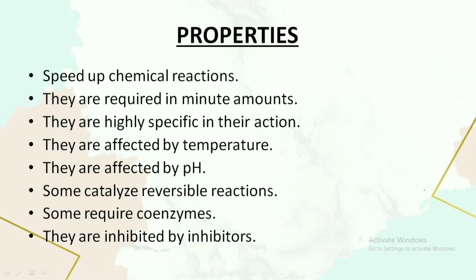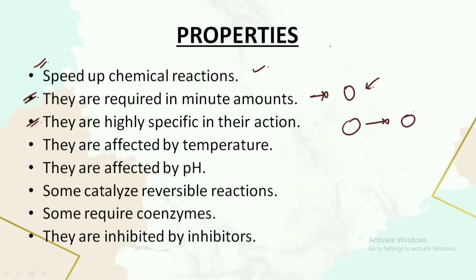Now let's understand the properties of enzymes. The first property is they speed up chemical reactions. They are required in very minute amounts. They are very specific in their action — a particular enzyme will function with a specific substrate only. We have also discussed the nomenclature of enzymes, including six different classes, in the first part.